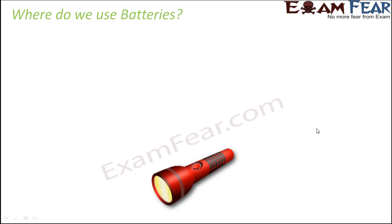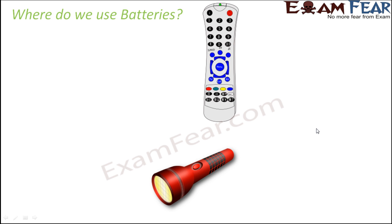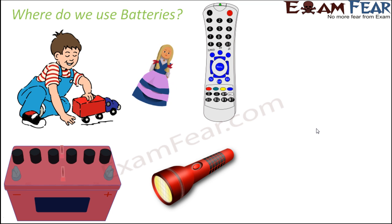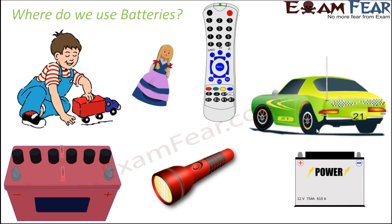Batteries are used in many things around us. Some of the best examples are torches — you switch them on and off and they give you light. Remotes use batteries, and so do many toys — toys that make sounds, toys that move, dolls that dance and sing all operate on batteries. Inverters or power backup devices that provide electricity during power cuts also contain batteries. Car engines and many other vehicles also use batteries, so batteries are very widely used in a lot of devices.